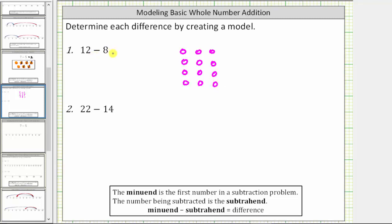And now because we are subtracting 8, we want to remove 8 of the 12 small circles. So we remove 1, 2, 3, 4, 5, 6, 7, 8 circles, leaving us with 4 circles, which gives us the difference.